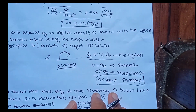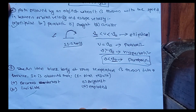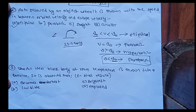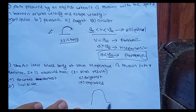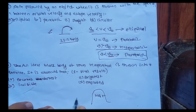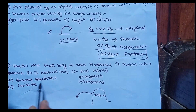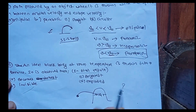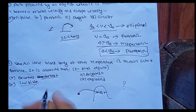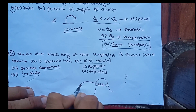Question about an ideal black body at room temperature thrown into a furnace. When a black body is put into a furnace, it will appear as the darkest object initially. Over time, the black body reaches thermal equilibrium with the furnace.